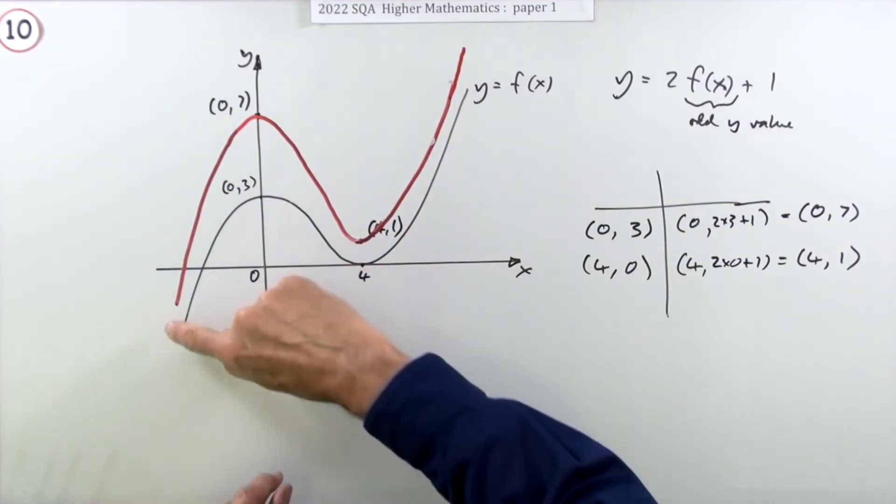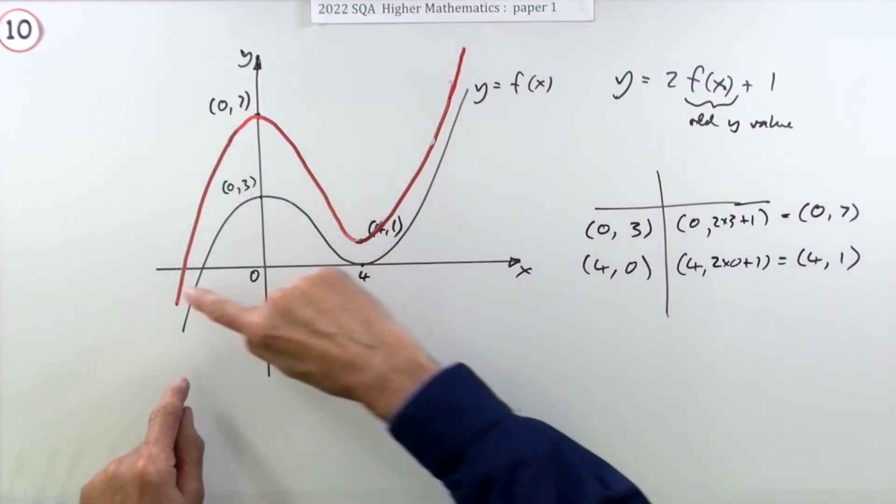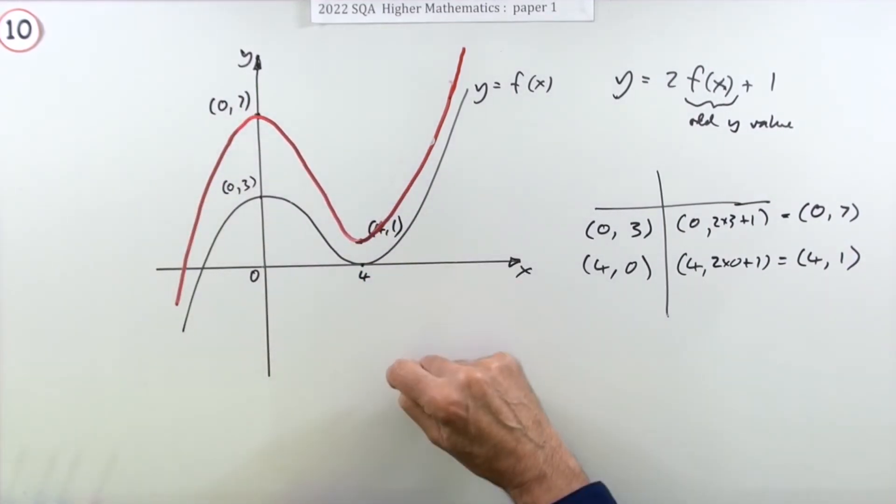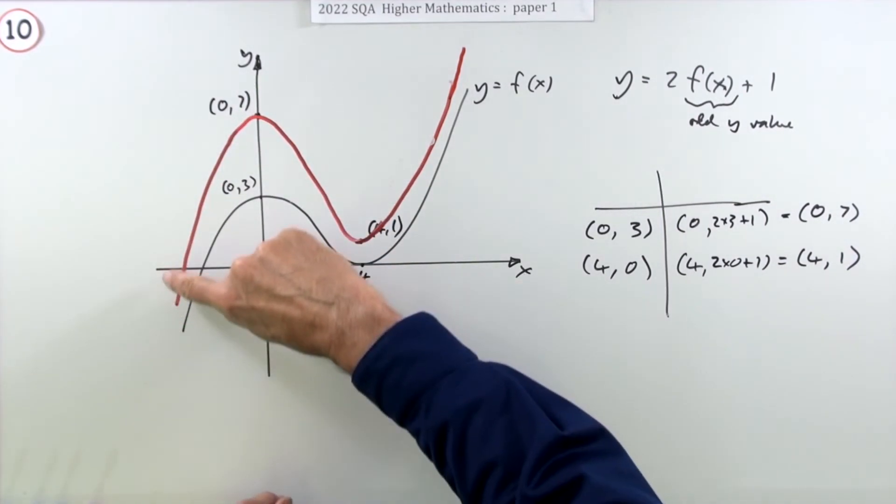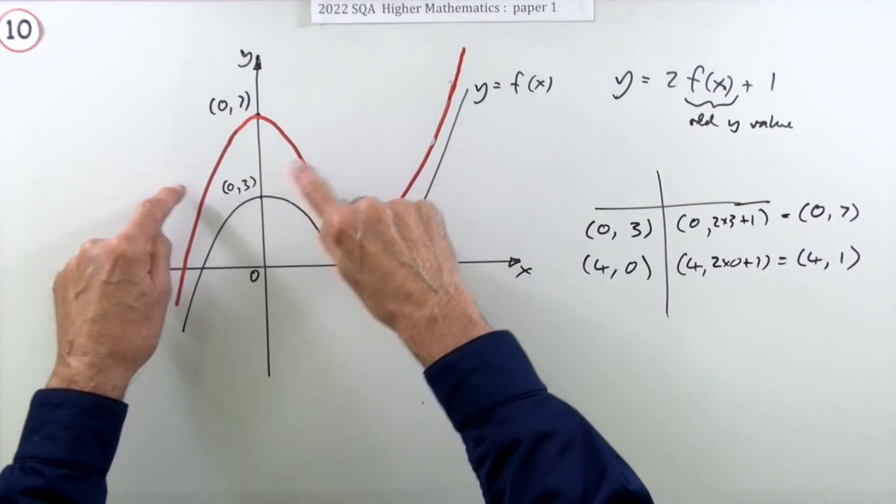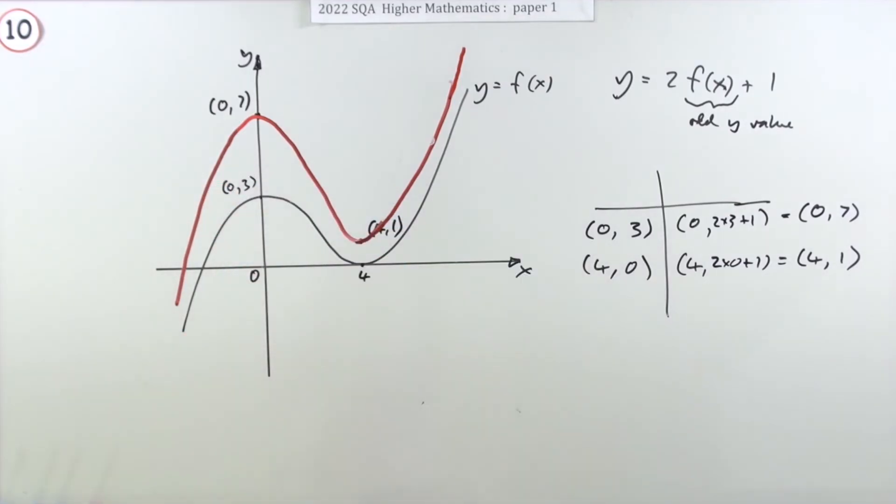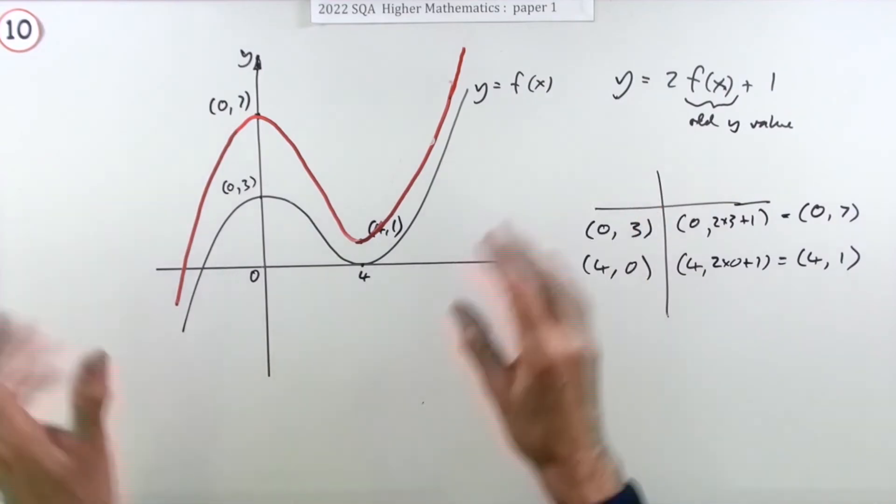It'll maintain the same cubic with a maximum here and a minimum there. So it should end up looking like this. Now they're not going to be too bothered about how exactly you draw that curve as long as it's got a maximum with that coordinate given and a minimum with that coordinate given. I don't think they're going to bother too much about the gradients, but the gradients of this curve should be steeper than the corresponding gradients of the original one.